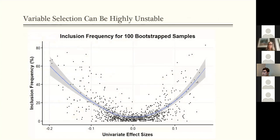So what happens is that if we just fit a common variable selection method here, like LASSO, we can see that it's very, very unstable.